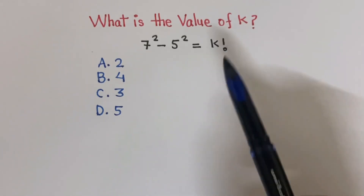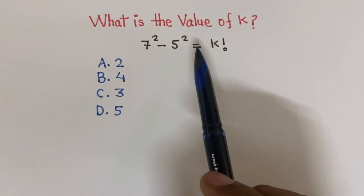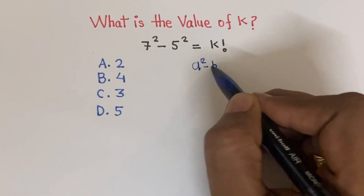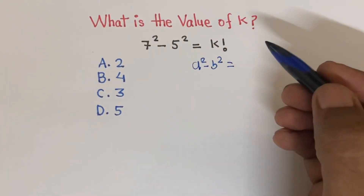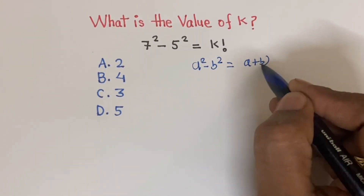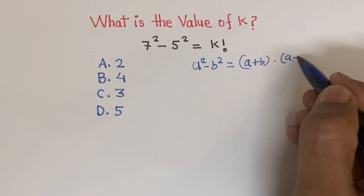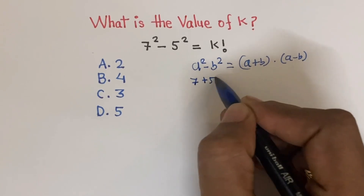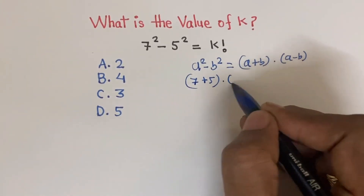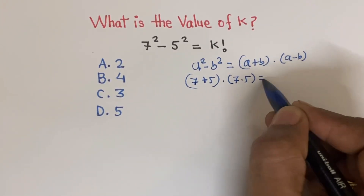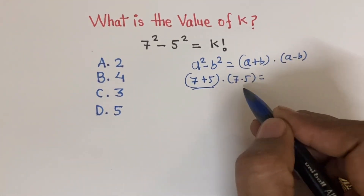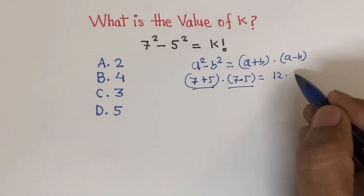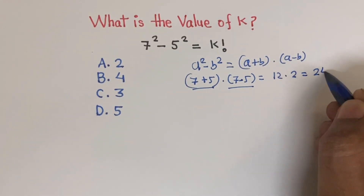To solve this, 7 squared minus 5 squared is in the form of a² minus b², which equals (a+b)(a-b). Therefore, (7+5) multiplied by (7-5) equals 12 multiplied by 2, which equals 24.